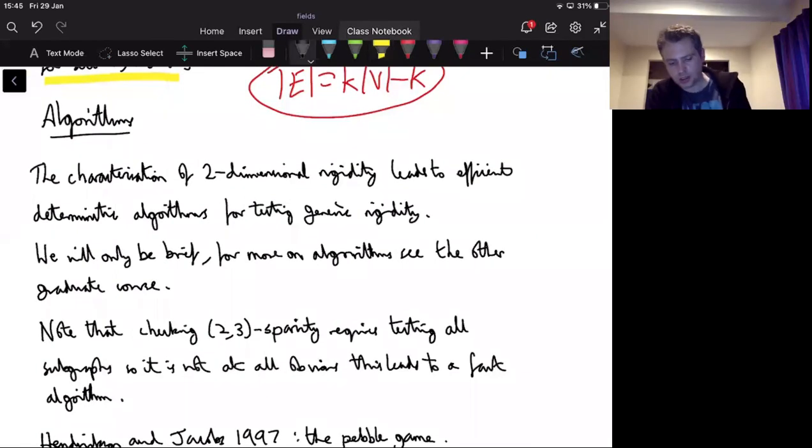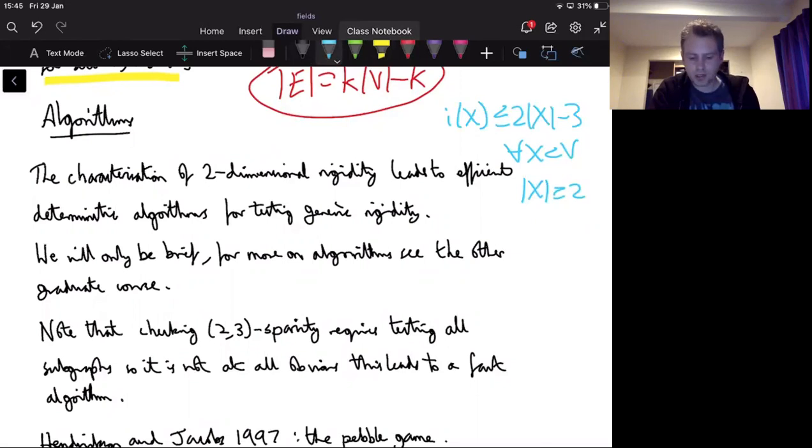So when you check the two-free-tight condition, remember, we have to check this for all X subset of V with X at least two. So we're checking as G grows, the number of subgraphs grows exponentially. So there's a lot to check. So it might not seem at first sight like the two-free-tight characterization gives a nice deterministic fast algorithm. But I do want to mention a little bit about why it does, although I will leave really the details of algorithms in geometric constraint systems to Mira's course.